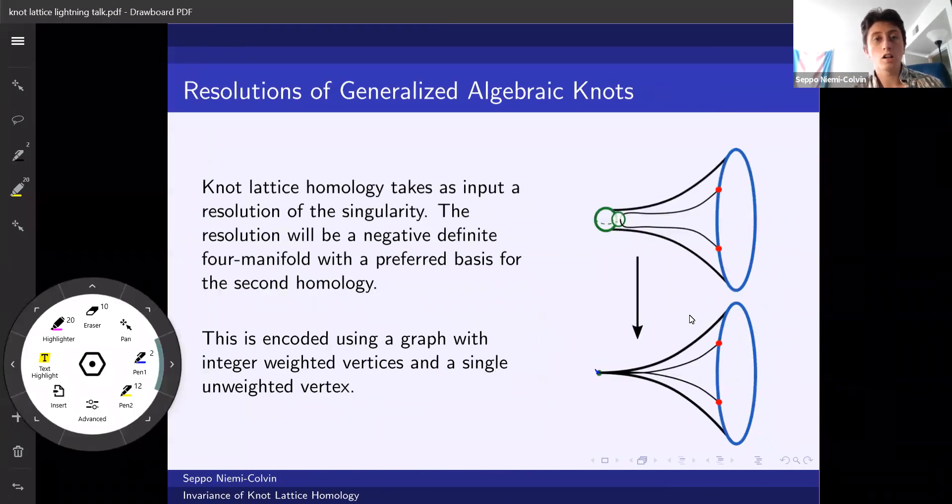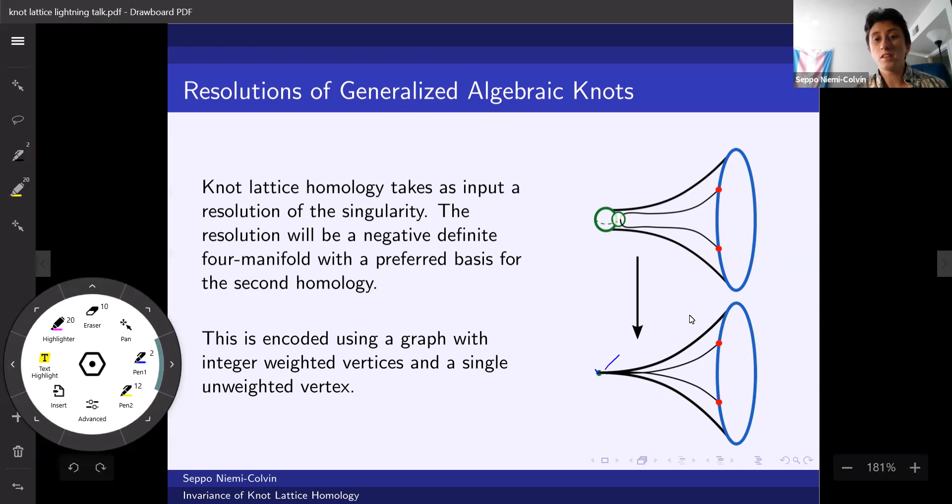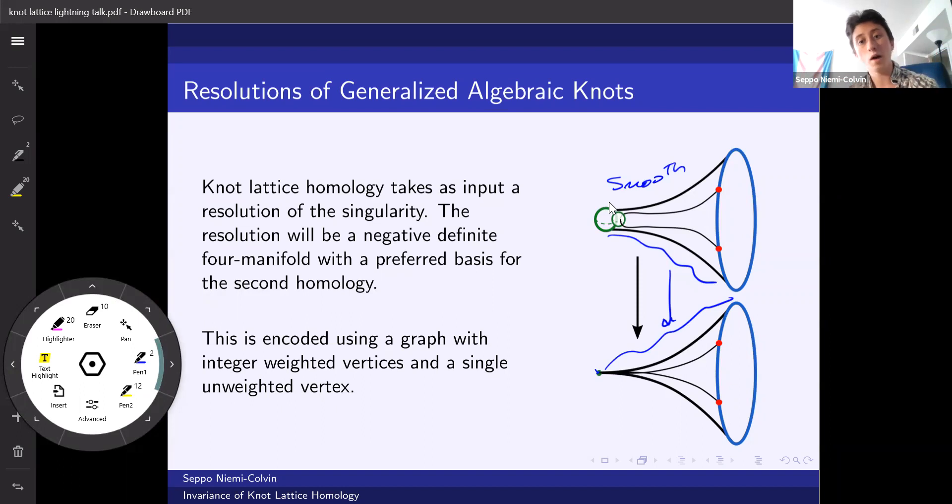The input for knot-lattice homology is a resolution of the singularity. This is a space and a map so that away from the singular point, the map's an isomorphism, and above the singular point we have some complex curves, i.e. topological surfaces, that spread things apart so that way it's now smooth. The surface should be smooth, the curve should be smooth, and the way that the special curve interacts with the exceptional curves that sit above the singularity should be nice.